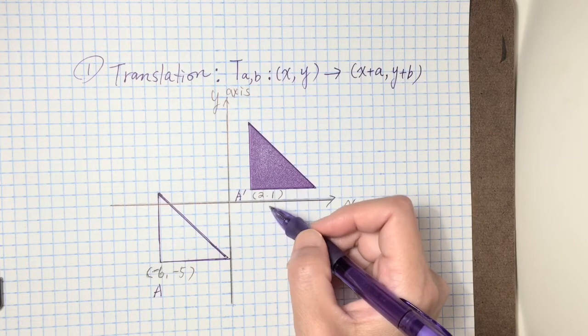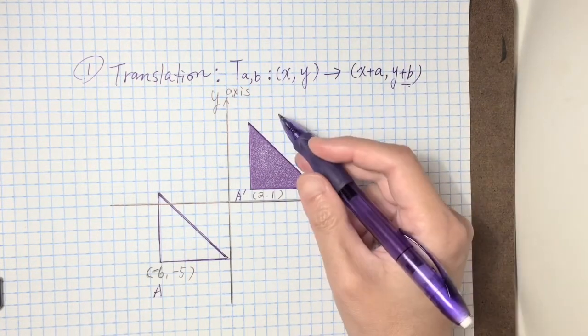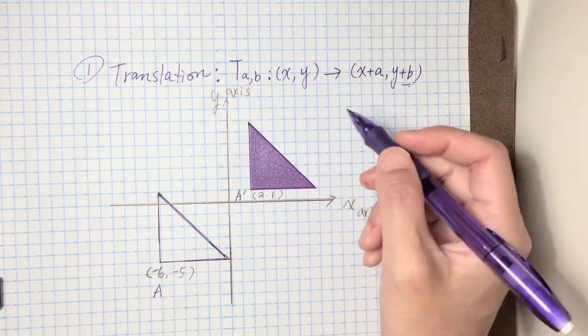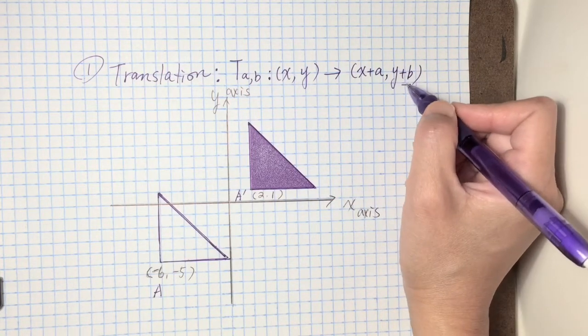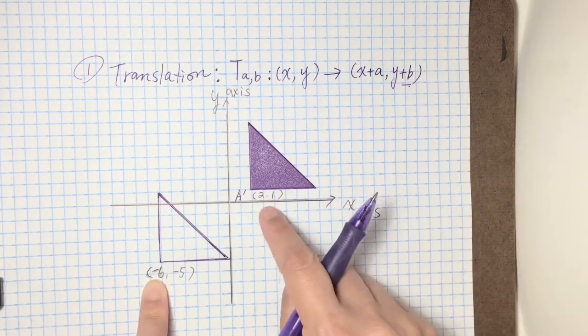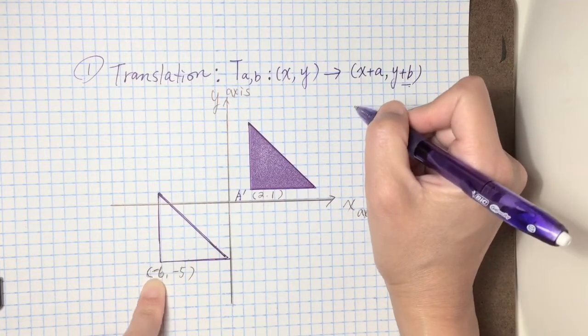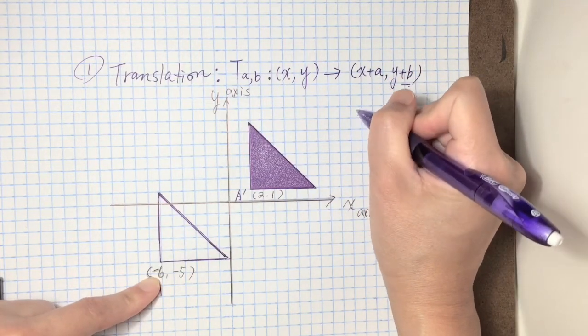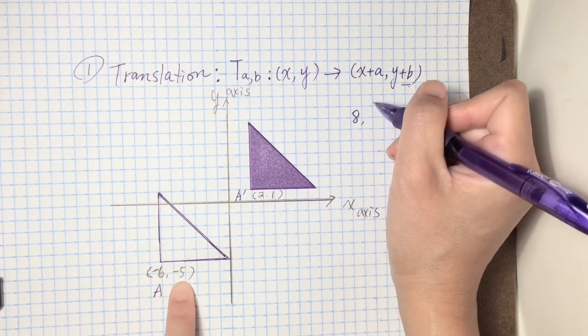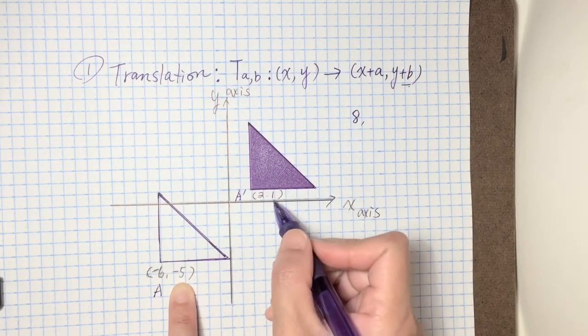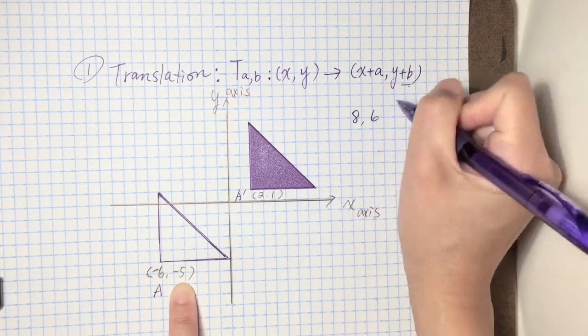Let's put negative six to positive two, so which means it's translate to eight units to the right and then up. In this case the A and B is negative six to two is to right eight, and then go up negative five to one will be six.